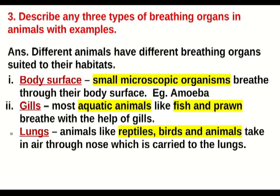Question number three: describe any three types of breathing organs in animals with examples. Answer: different animals have different breathing organs suited to their habitats. First, body surface — small microscopic organisms breathe through their body surface. Example: amoeba. Second, gills — most aquatic animals like fish and prawn breathe with the help of gills. Third, lungs — animals like reptiles and birds take air through the nose, which is carried to the lungs.